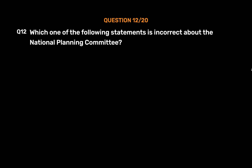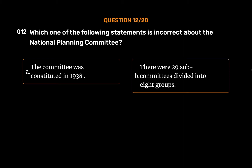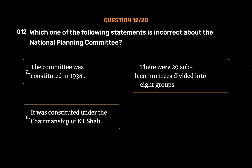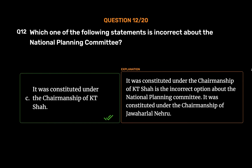Question 12: Which one of the following statements is incorrect about the National Planning Committee? Options: A. The committee was constituted in 1938; B. There were 29 subcommittees divided into 8 groups; C. It was constituted under the chairmanship of K.T. Shah; D. Its major areas focused on agriculture, industry, finance, social services, and education. The correct answer is Option C — it was actually constituted under the chairmanship of Jawaharlal Nehru, not K.T. Shah.